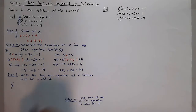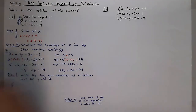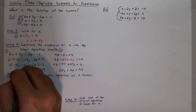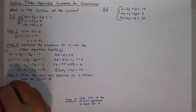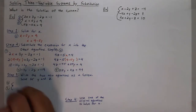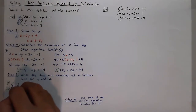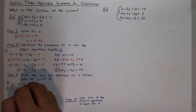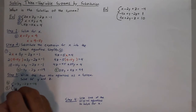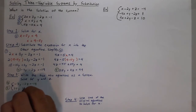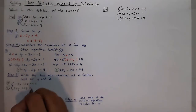Now I can take both of these equations — I'll call them equations 4 and 5 — and make my own system with them. So negative 7y minus 2z equals negative 19, and 25y plus 4z is equal to 49.